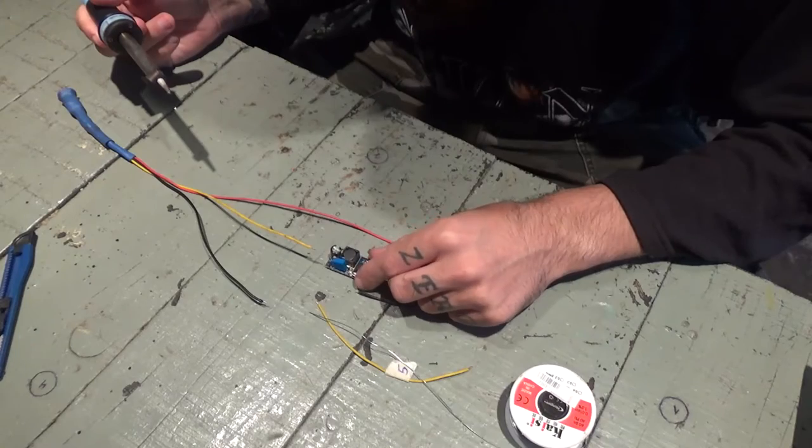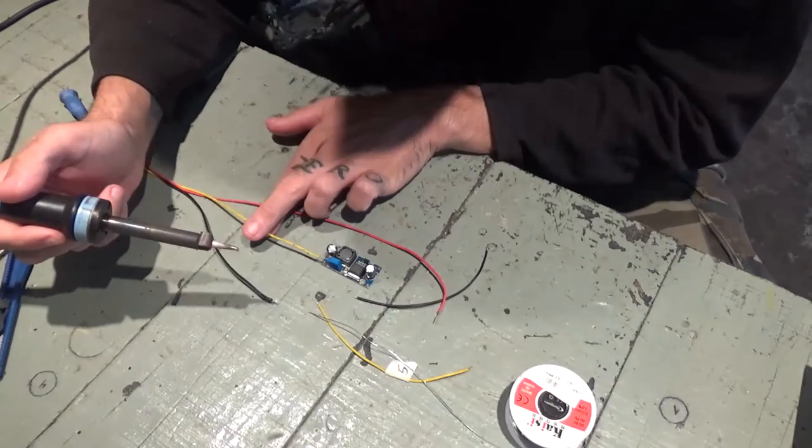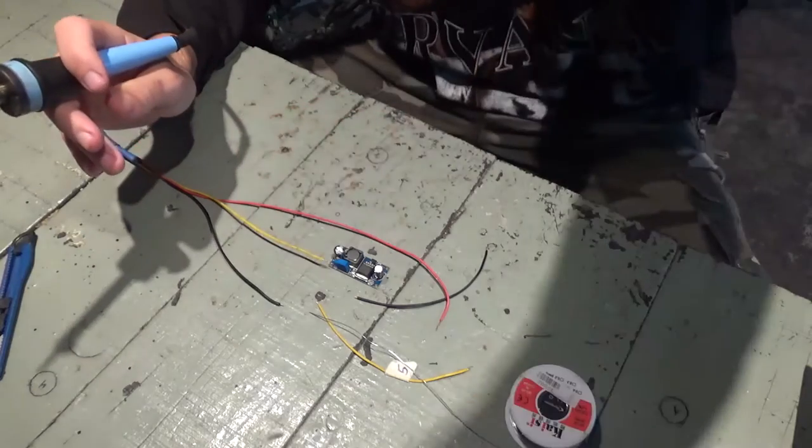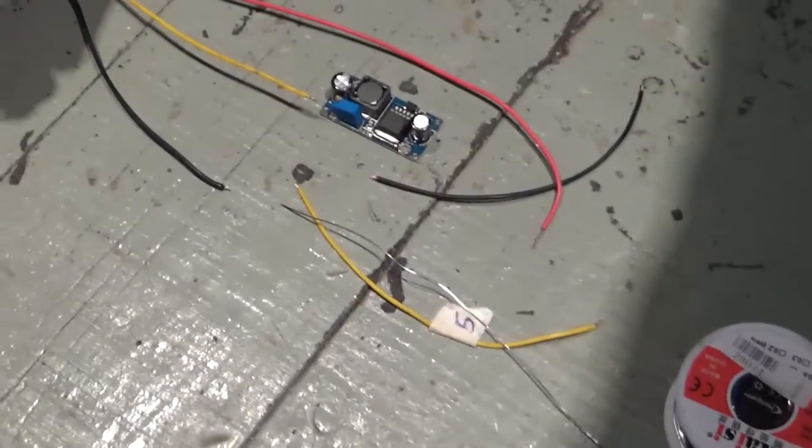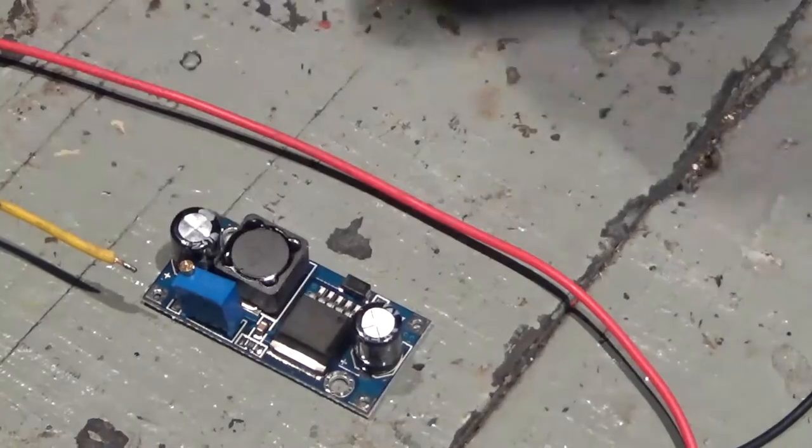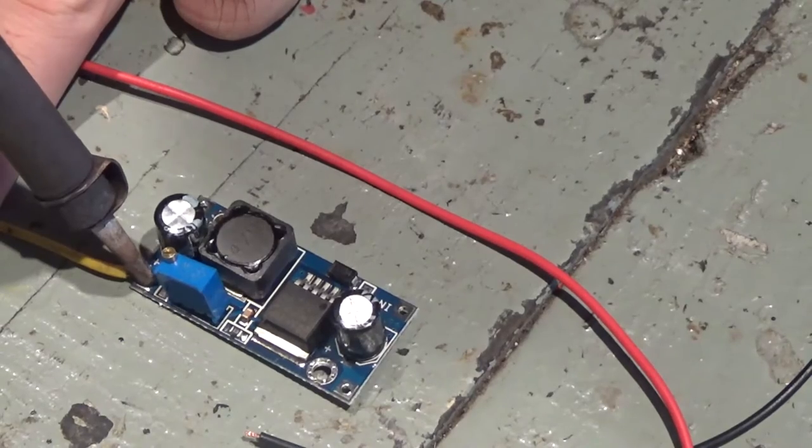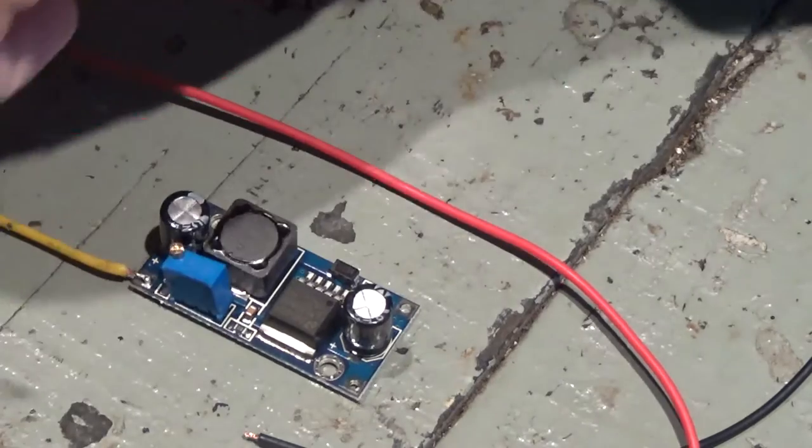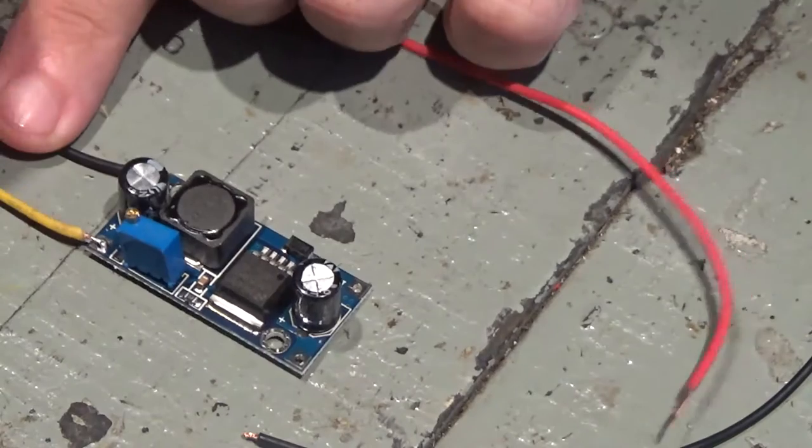So yellow wire is gonna be soldered on the voltage out plus of the regulator. I'm not sure if you can see it, I could zoom in a little bit. Whoa! Okay, yellow wire goes to the voltage out of the regulator. Black wire goes to the minus voltage out.